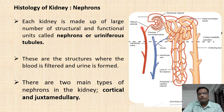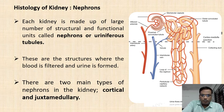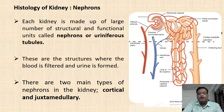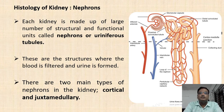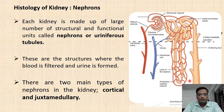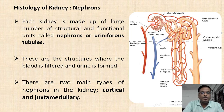The nephron is surrounded by blood vessels. The Bowman's capsule receives blood through the afferent arteriole, and blood exits via the efferent arteriole. The loop of Henle is also surrounded by blood vessels. The nephron is both the structural and functional unit where urine is produced.